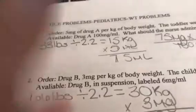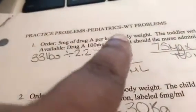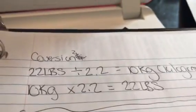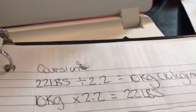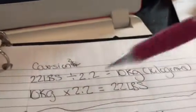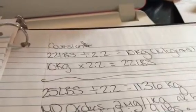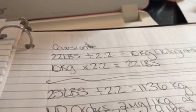For pediatric dosage calculations, you always have to divide the pounds by 2.2, which is going to give you kilograms. So 10 kilograms, that's 22 pounds divided by 2.2 equals 10 kilograms. 10 kilograms times 2.2 is 22 pounds. That's how you get back and forth, but 2.2 is what you always divide by to get the kilograms.